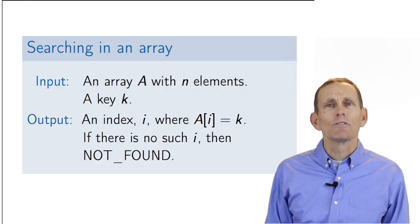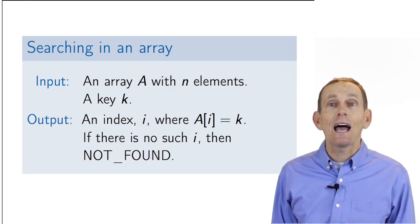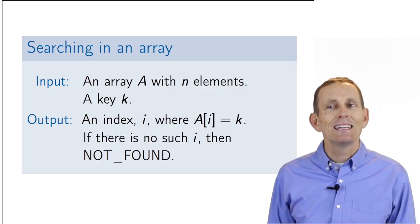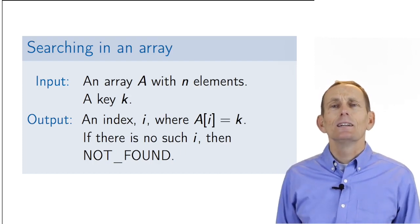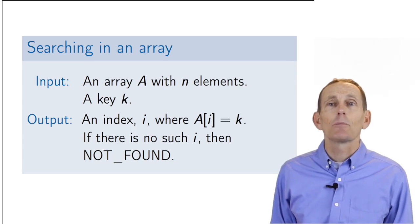The problem statement for linear search is as follows. Given an unsorted array with n elements in it and a key k, find an index i of the array element that's equal to k. If no element in the array is equal to k, the output should be not found. Note that we say an index rather than the index to account for the fact that there may be duplicates in the array. This might seem pedantic, but it's important to be as careful as possible in specifying our problem statement.